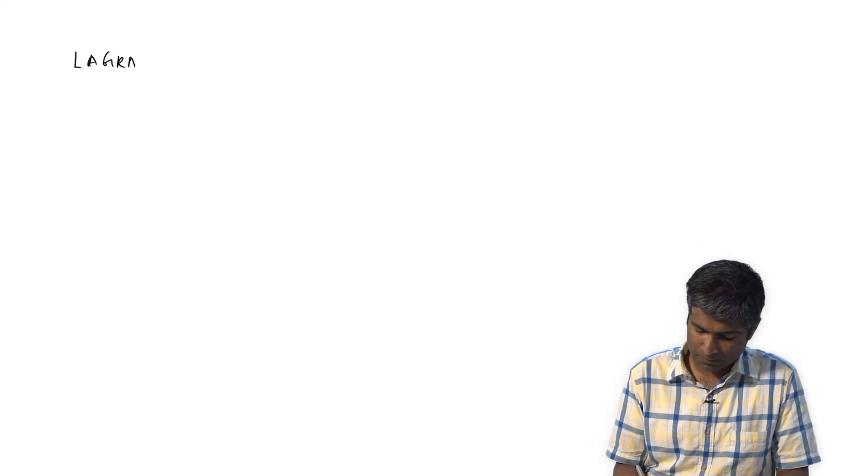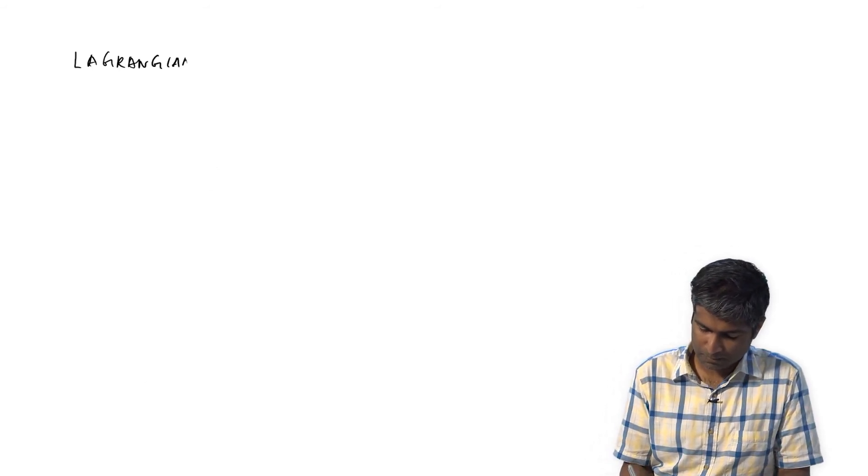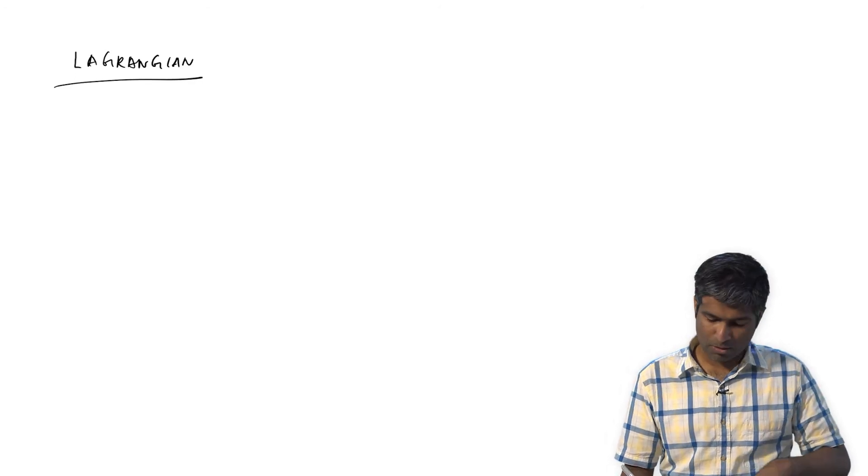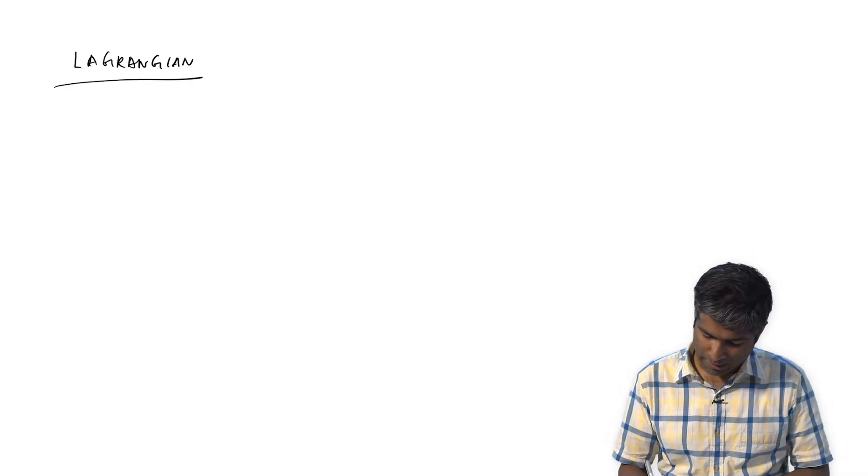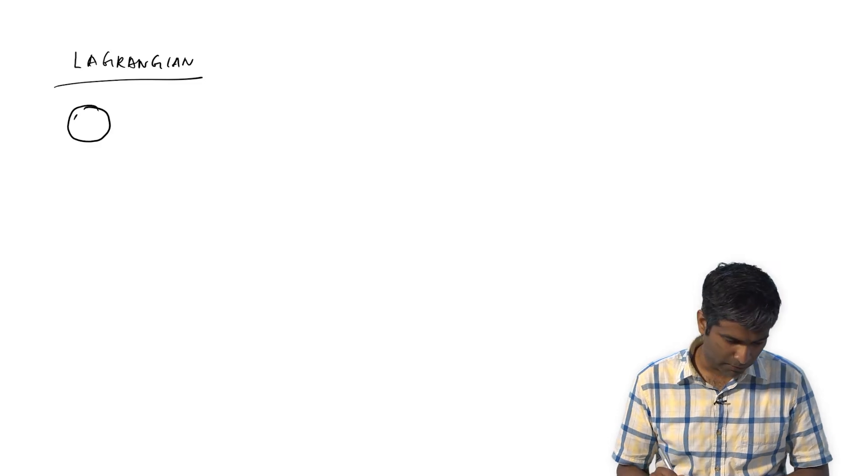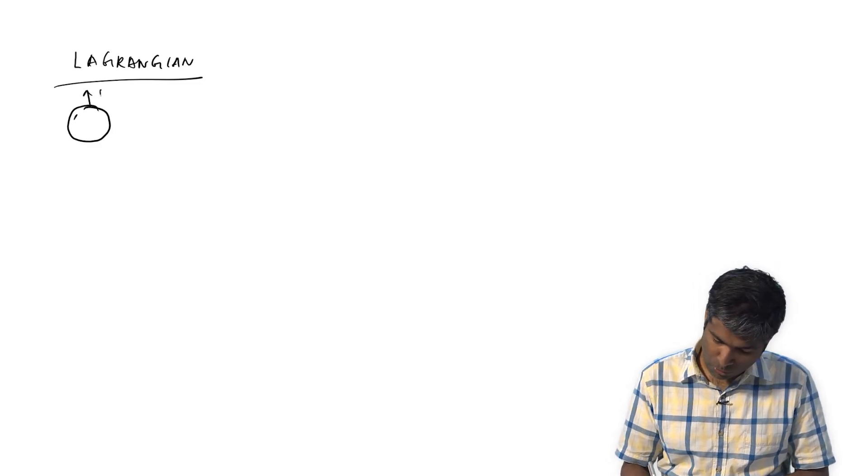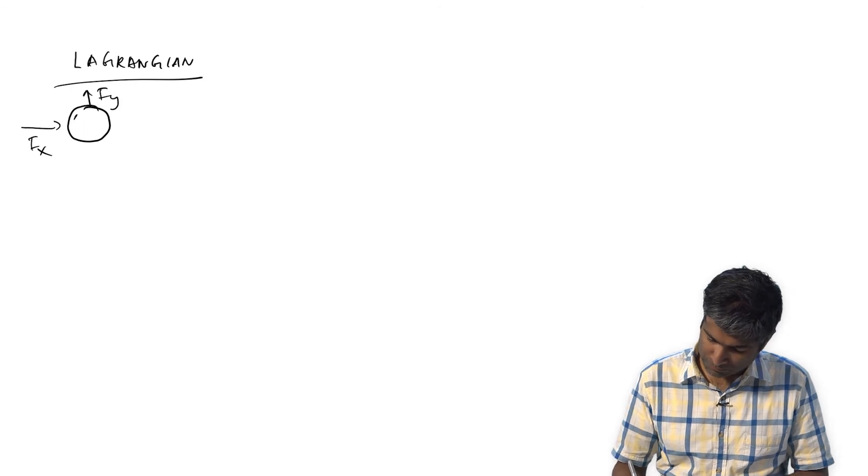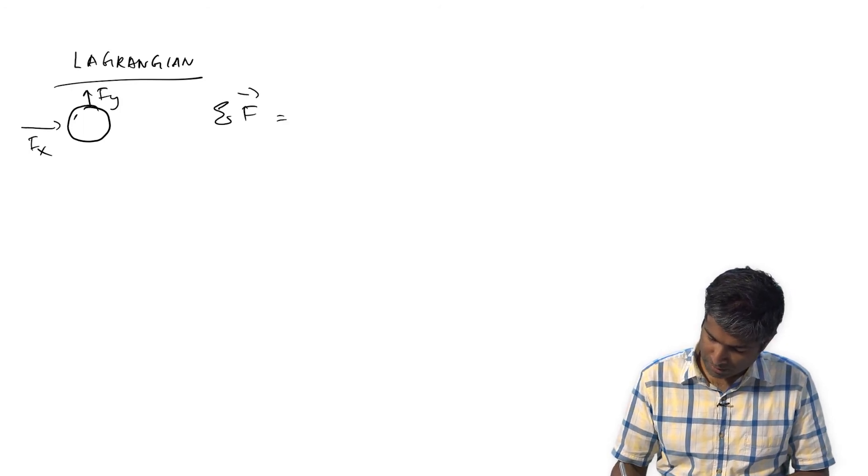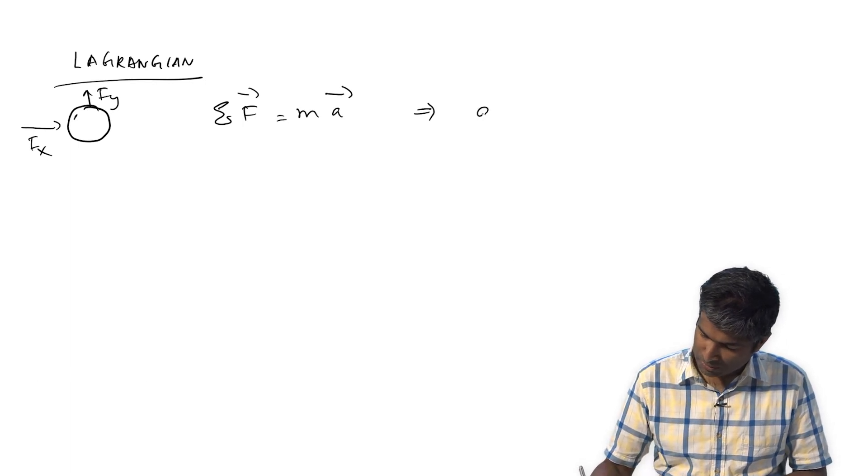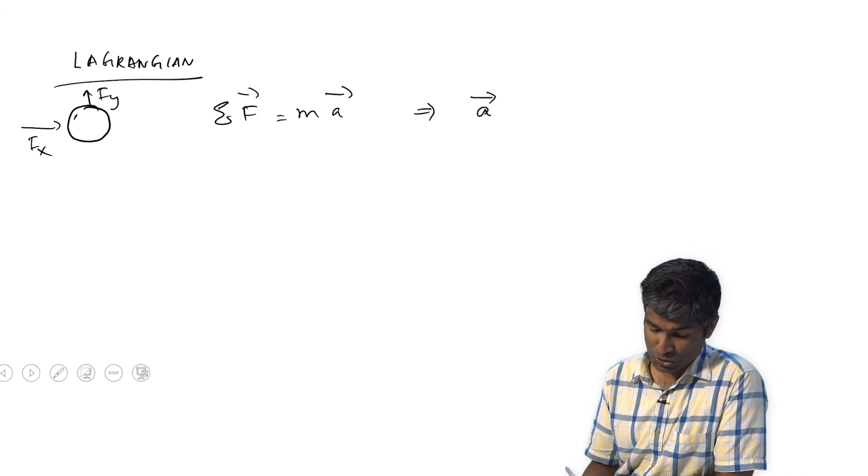So the Lagrangian system would say, okay, you take this particle, you draw a free body diagram for that particle. Now you know Fy, Fx acting on the particle. You can write summation F equals Ma. And so this gives you the acceleration if you know the force.